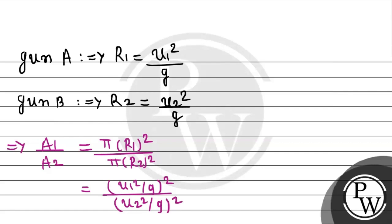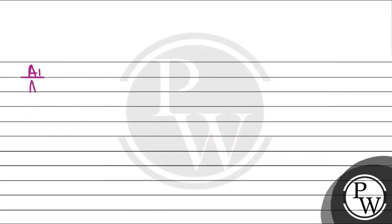G will also cancel. So the ratio of areas becomes u1 to the power 4 divided by u2 to the power 4. Now let's substitute values. This will be equal to 1 to the power 4 divided by 2 to the power 4. 1 to the power 4 is 1 and 2 to the power 4 is 16. So simply the area ratio comes out to 1 by 16.